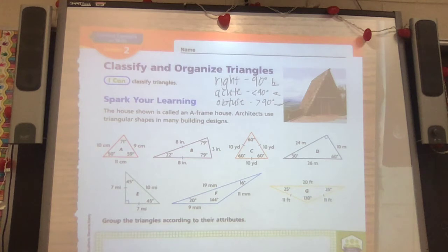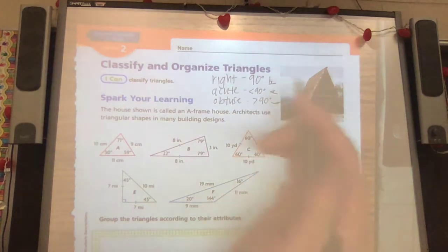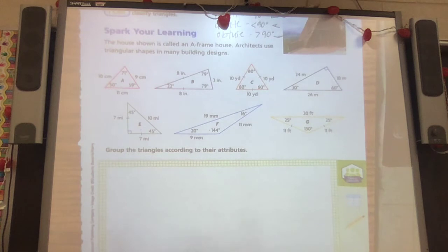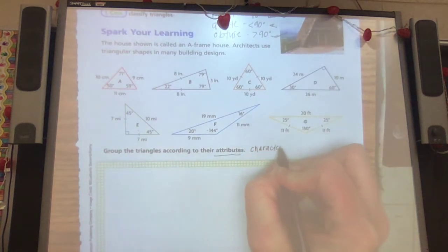All right. So let's look at this first one. It says the house shown is called an A-frame house. A-frame, looks like an A. Architects use triangular shapes in many building designs. So we see all of our triangles. And it says group the triangles according to their attributes, their characteristics, how you would describe them.